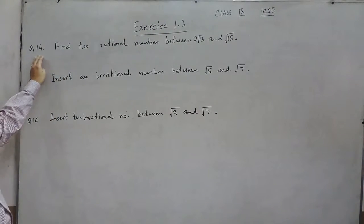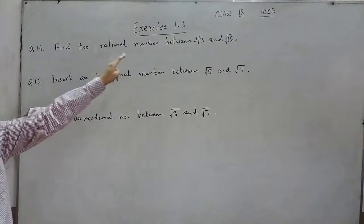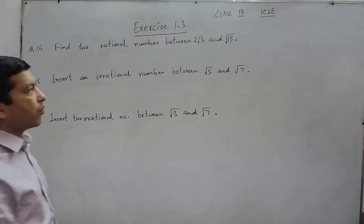Hello everyone, question number 14 is: find two rational numbers between 2 root 3 and root 15.